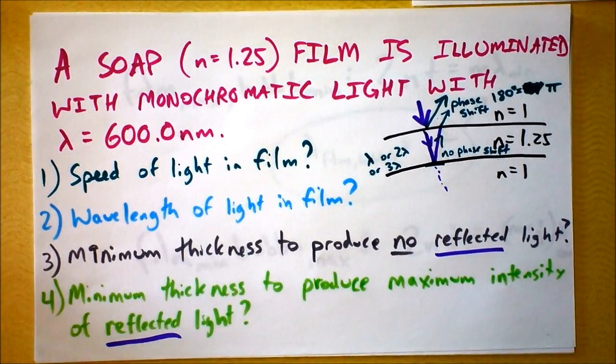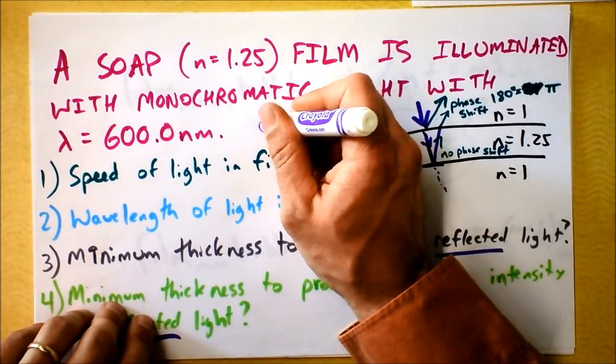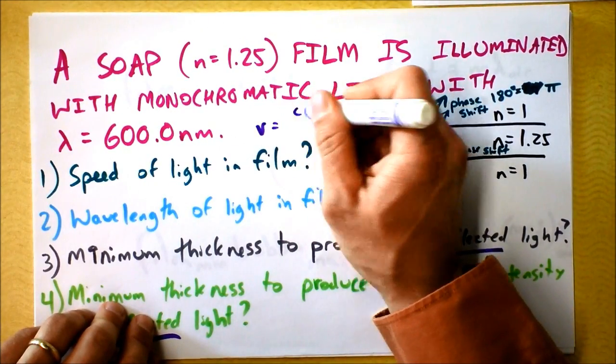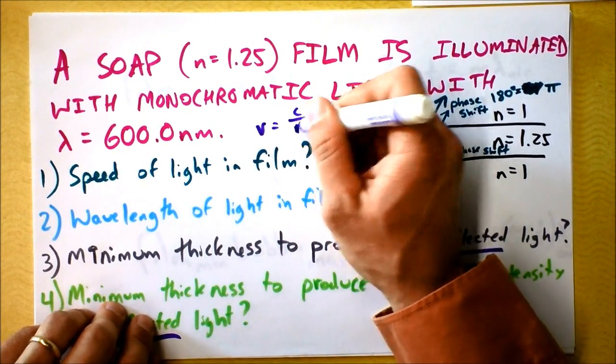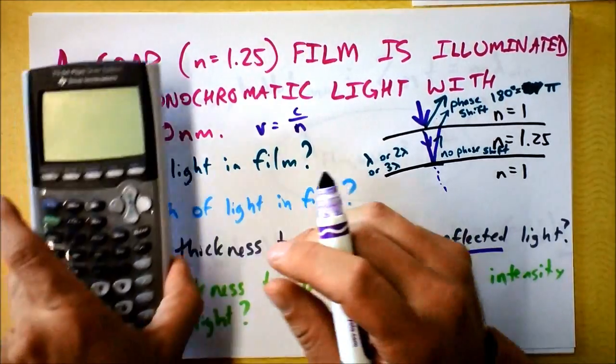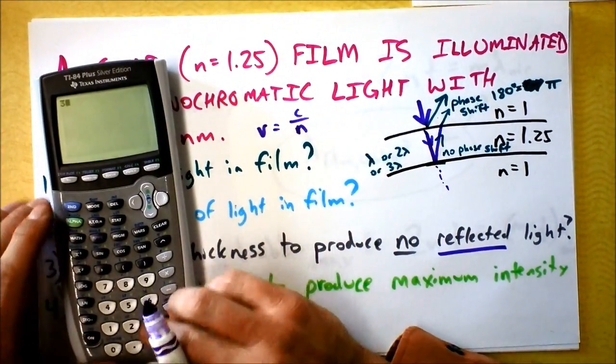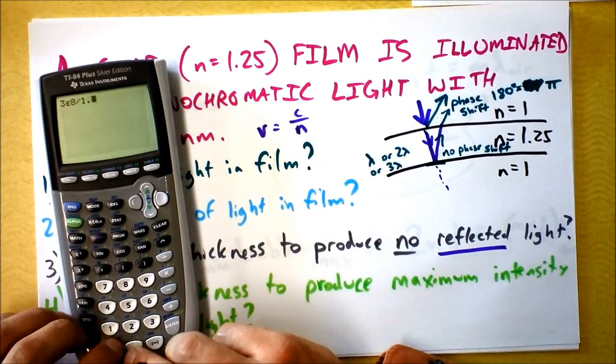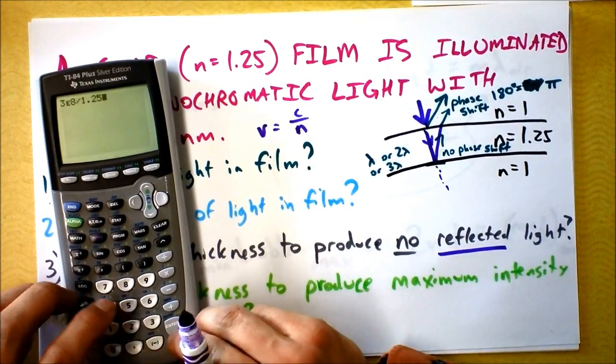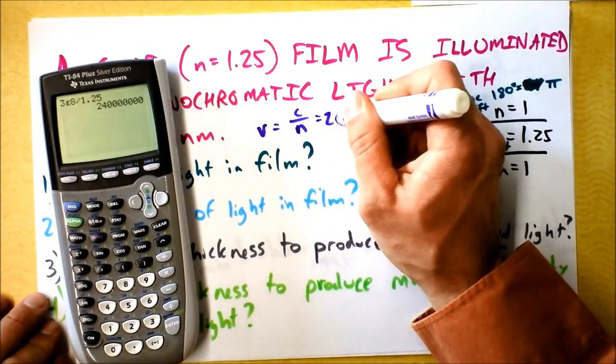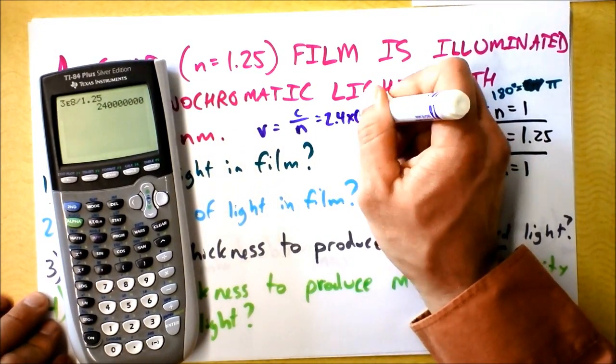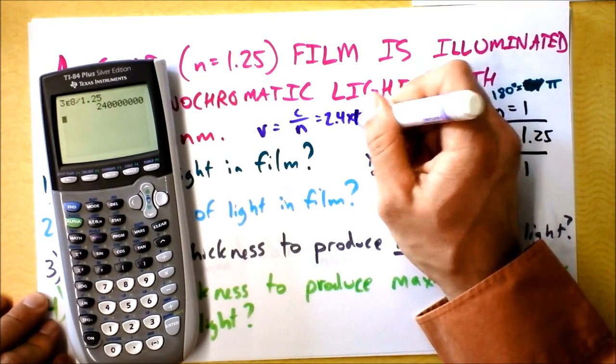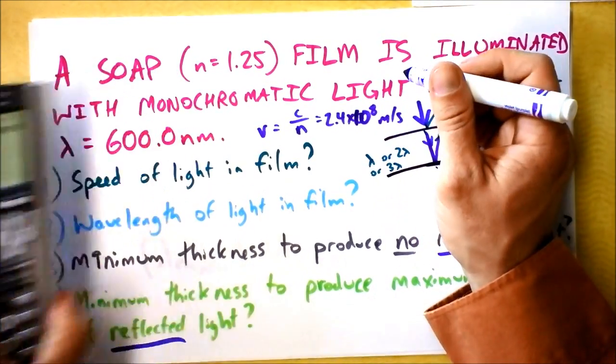The speed of light in a film, that's going to be pretty easy. The speed of light in a material is the speed of light outside the material divided by the material's index of refraction. So I'm going to take 3×10^8, divide it by 1.25 and hit enter. That gives me 2.4×10^8 meters per second.